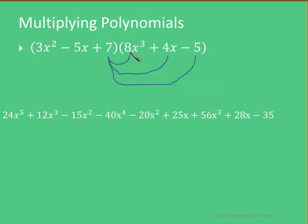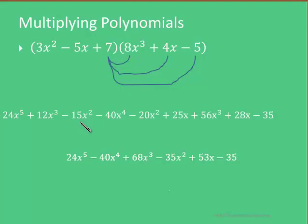7 times 8x cubed gives us 56x cubed. Then 7 times 4x gives us 28x. And then 7 times minus 5 gives us minus 35. And then what's left to do is simplify this expression.